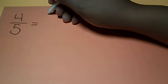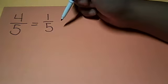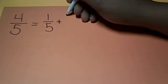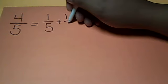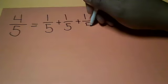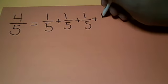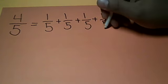So we are going to decompose this fraction here into unit fractions first. If you remember, unit fractions means 1, so it would be 1 fifth, because the denominator stays the same, plus 1 fifth, plus 1 fifth, plus 1 fifth.